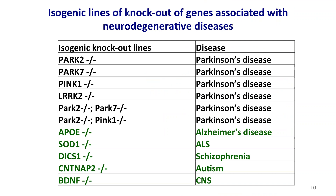After controls and patient-specific lines, it's important also to have isogenic controls. In this case, I'm going to talk about the knockout lines we made in genes associated with different neurodegenerative diseases. Because of my focus on Parkinson's disease, we made many lines associated with Parkinson's, but we also made many other lines in the domain of neurodegenerative disease. I'll show you a sample of each — an Alzheimer's and a Parkinson's disease line.